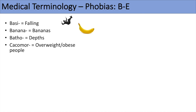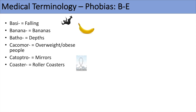Another prefix is cacomorpho, meaning overweight or obese people, so cacomorphophobia is a fear of overweight or obese people. Catoptro means mirrors, so catoptrophobia is a fear of mirrors. Another one is coaster, simply referring to roller coasters, so coasterphobia is a fear of roller coasters — an easy one to remember. The next is cibo or sitiophobia, meaning food, so sitophobia or cibophobia would be a fear of food. The next prefix is chaeto, meaning hair, so chaetophobia is a fear of hair.